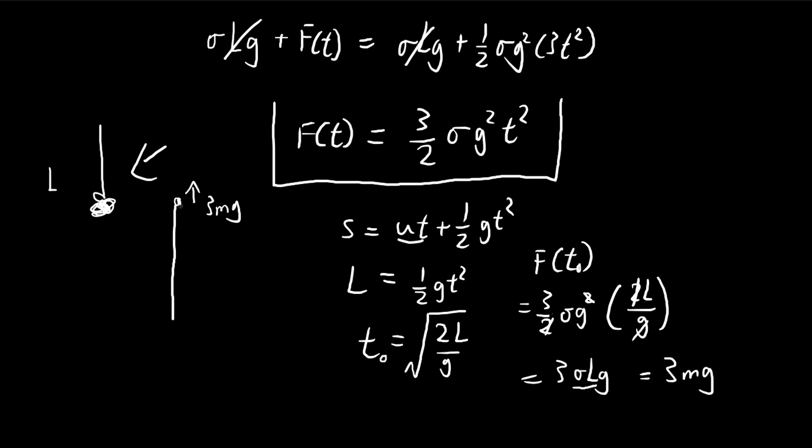But once it stops, notice that the only force that we need to keep the chain still is just mg, because once it has stopped unwinding, it's just a still chain. So it's just a matter of holding this chain, keeping the chain up. So the very moment that the chain unwinds, the force that our hand experiences is 3mg, but right after that, it's going to immediately turn to mg. So this is an interesting thing that you might observe. That is all for this question. I hope it helped. I'll see you in the next video.